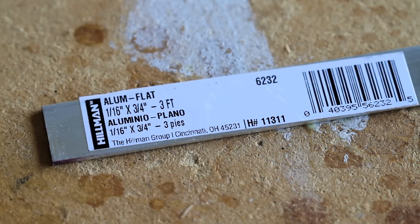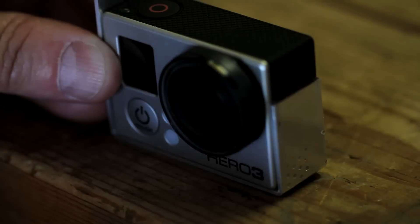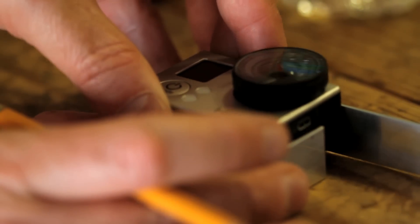To build one, you will need a strip of ¾ inch wide, 1/16th inch thick aluminum. Use your HERO3 as a guide. Mark and bend the aluminum around the camera, leaving two pieces overlapping on one side. Cut off the excess.